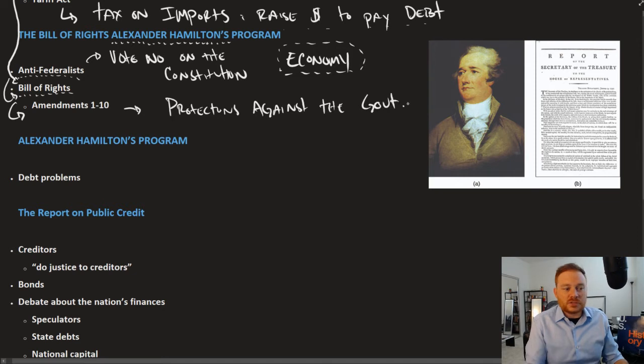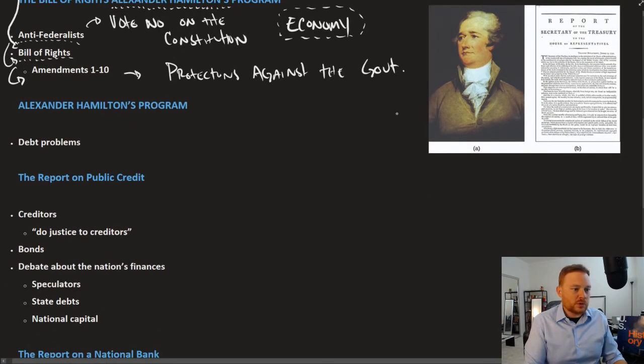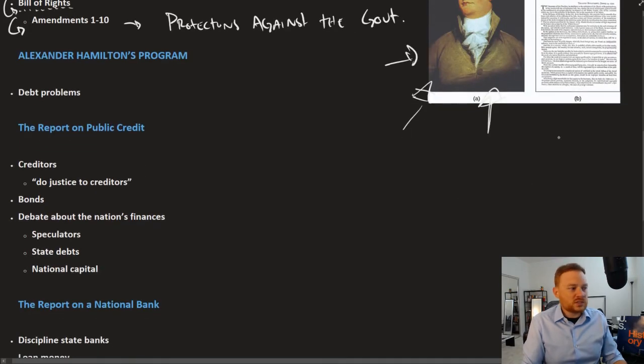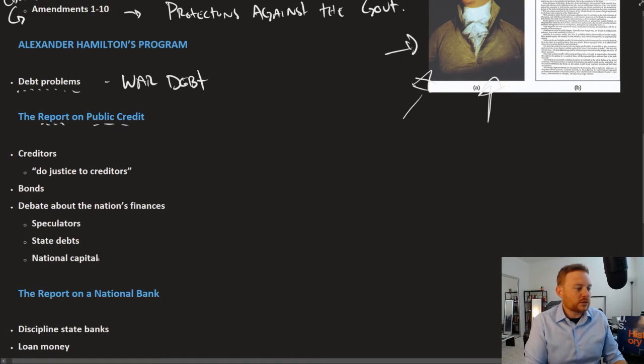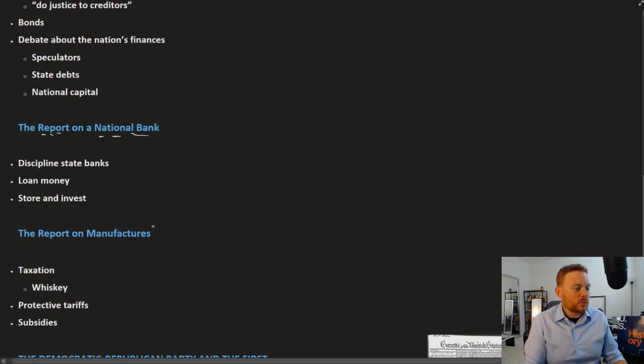One of the things the first Congress did was to pass the Bill of Rights, which created 10 amendments to the Constitution. The Bill of Rights is a list of rights in which the government cannot encroach upon. These are protections against the government. So let's get to Hamilton's economic program.